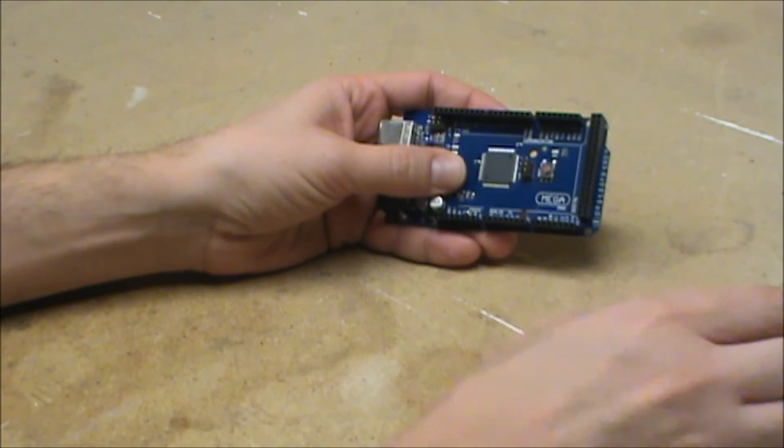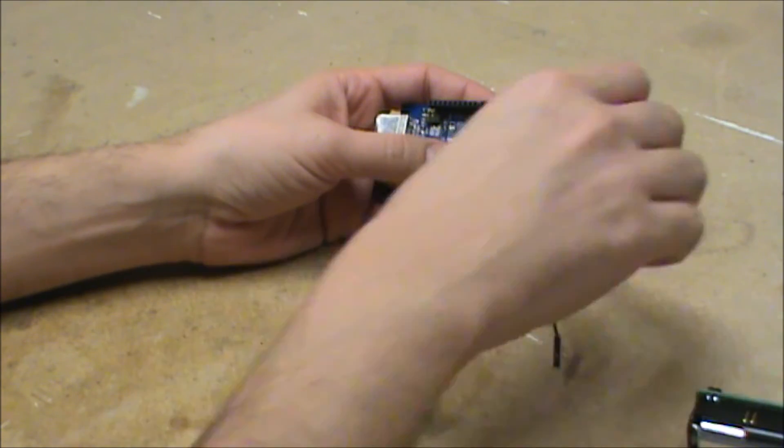If that doesn't work, you can even take it and add jumper wires and jump to the points that you need.